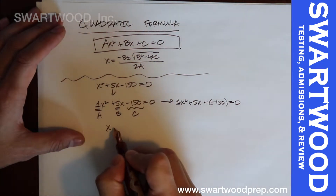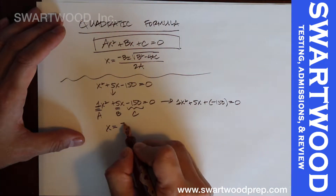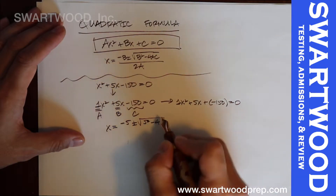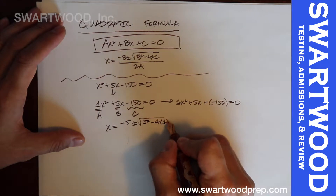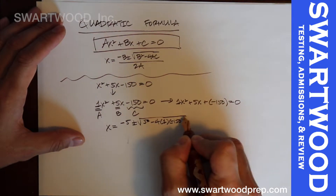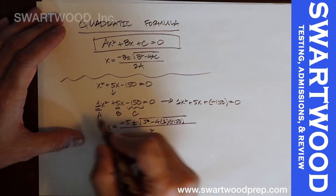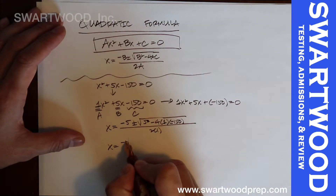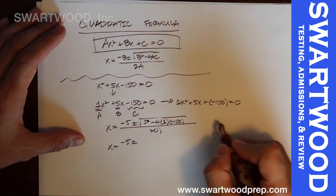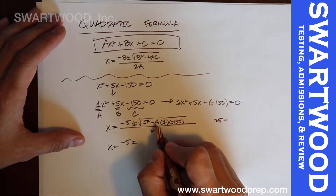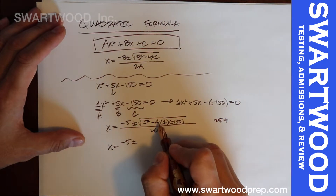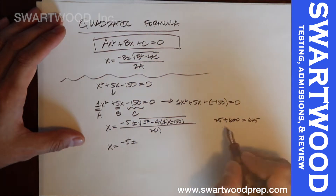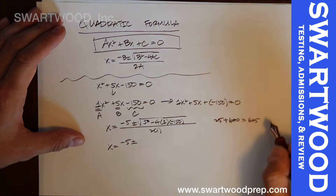Now it's just plug-and-chug. Negative b is negative 5, plus or minus b squared — so 5 squared — minus 4 times a, which is 1, times c, which is negative 150, over 2a, which is 2. So that's negative 5 plus or minus: 25, then a minus times a minus gives a plus, so 4 times 150 is 600, giving us 625 under the radical.